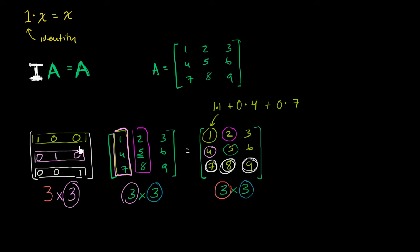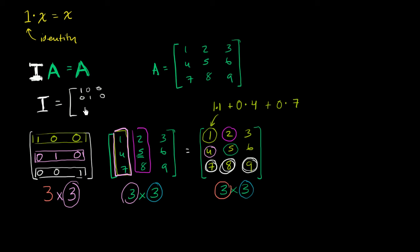And just like that, we have constructed a 3 by 3 identity matrix. The 3 by 3 identity matrix is: 1, 0, 0 in the first row; 0, 1, 0 in the second row; and 0, 0, 1 in the third row.